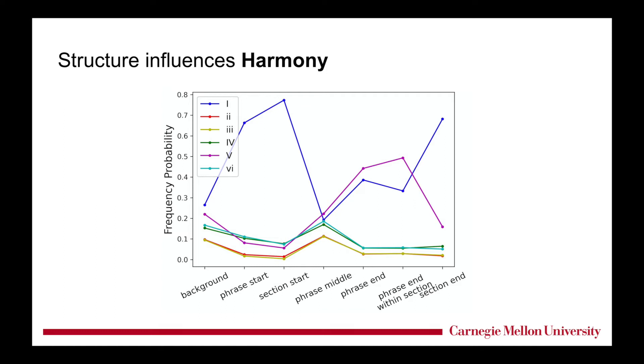For example, background means all the locations, no specifications. And next is a start location of a phrase, start location of a section, and so on. Here different colors are different chords.